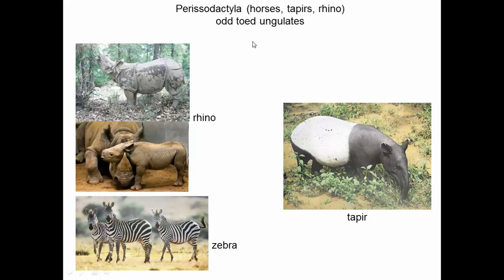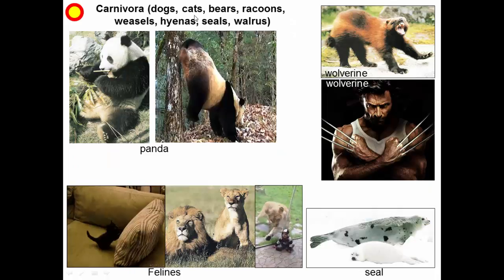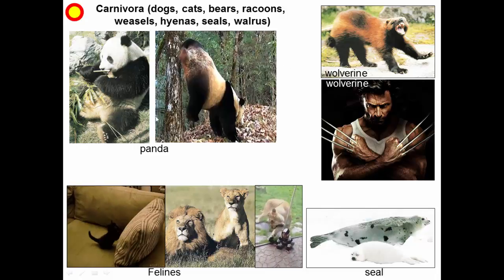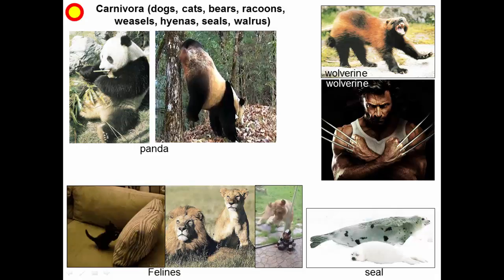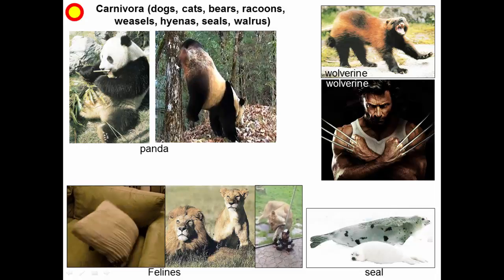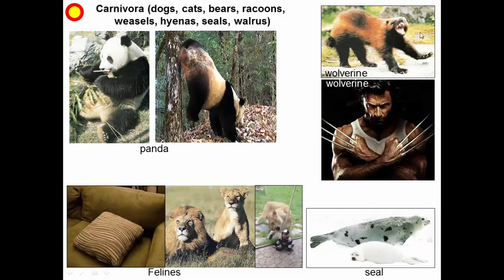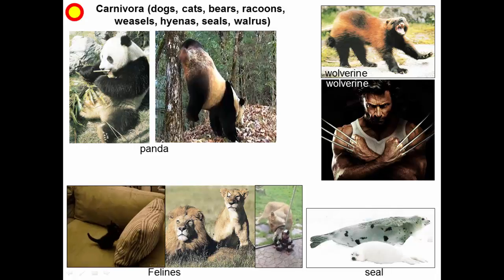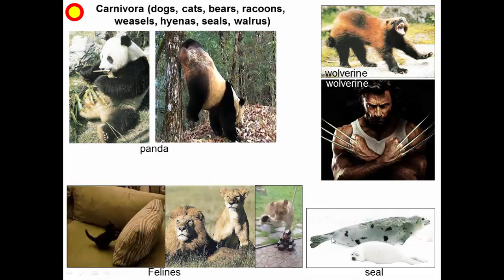Carnivora includes dogs, cats, bears, raccoons, weasels, hyenas, seals, and walruses — the meat-eating organisms. Although pandas don't eat meat, they're bears, so they're within Carnivora. Pandas do handstands to mark their trees as high up as possible. The wolverine from the movies has a real animal counterpart that's just as fierce. Carnivora also includes a group that evolved to go back into the water — seals, walruses, and sea lions — sometimes described as 'dog mermaids.'